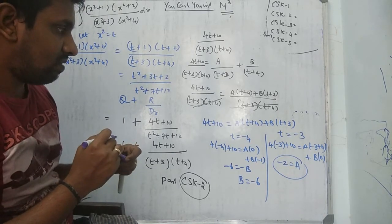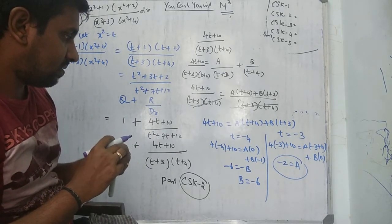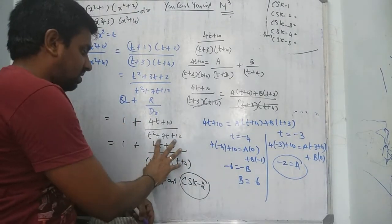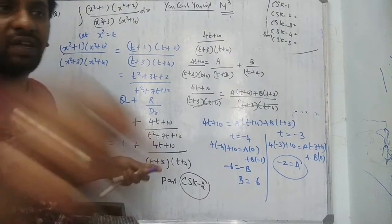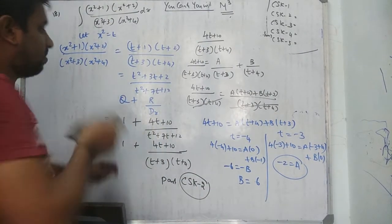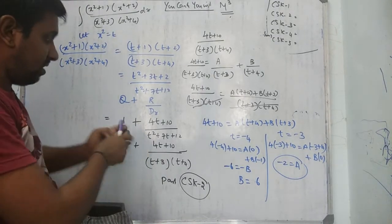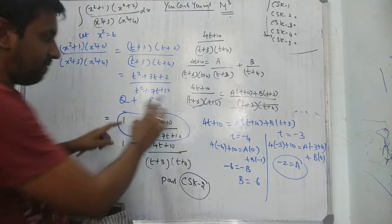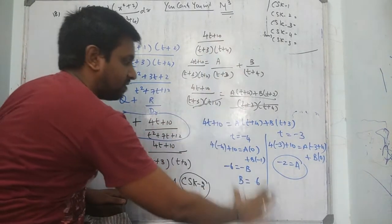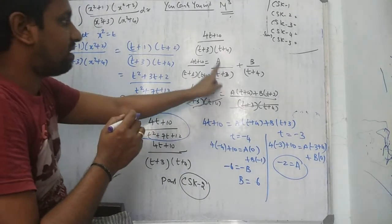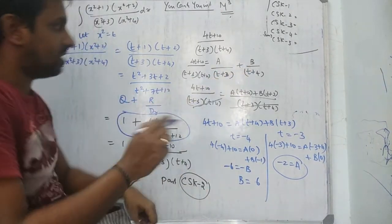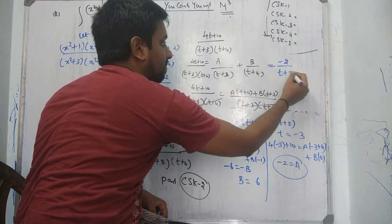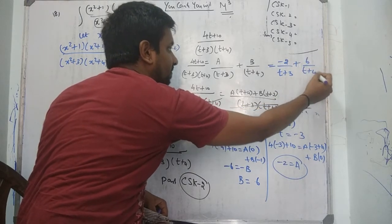Now substitute back. Don't forget the quotient part — this is your original expression. So the full fraction becomes 1 plus A over (t + 3) plus B over (t + 4). Substituting A equals minus 2 and B equals 6: we get 1 plus minus 2 over (t + 3) plus 6 over (t + 4).